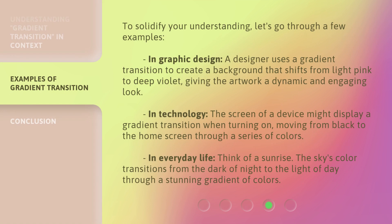To solidify your understanding, let's go through a few examples. In graphic design, a designer uses a gradient transition to create a background that shifts from light pink to deep violet, giving the artwork a dynamic and engaging look. In technology, the screen of a device might display a gradient transition when turning on, moving from black to the home screen through a series of colors. In everyday life, think of a sunrise — the sky's color transitions from the dark of night to the light of day through a stunning gradient of colors.